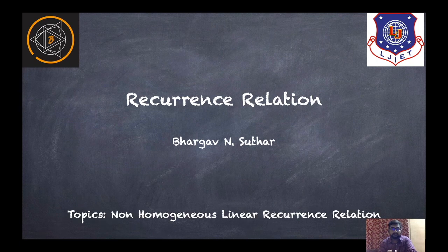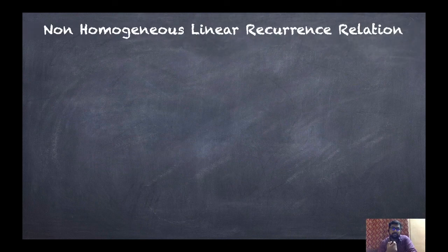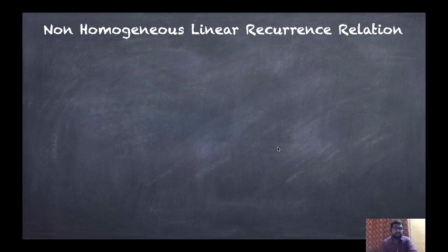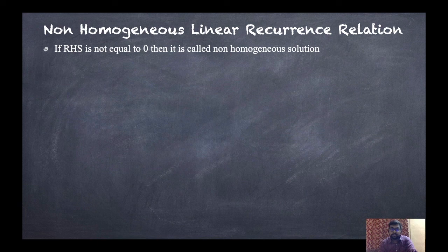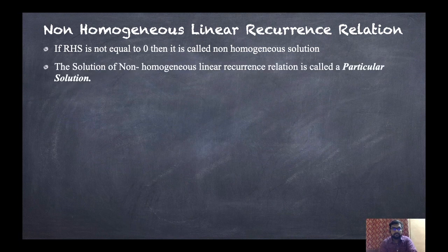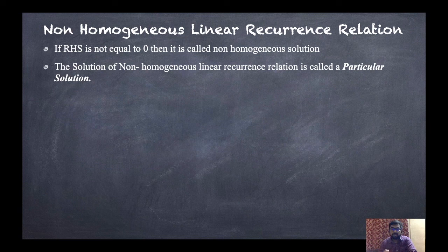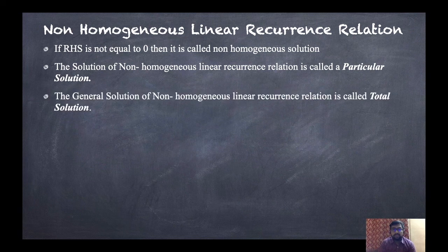Now we will discuss non-homogeneous linear recurrence relations. For homogeneous, if the right-hand side equals zero, it is called a homogeneous recurrence relation and its solution is called a homogeneous solution. If the right-hand side is not equal to zero, then it is called a non-homogeneous equation and its solution is called a particular solution.